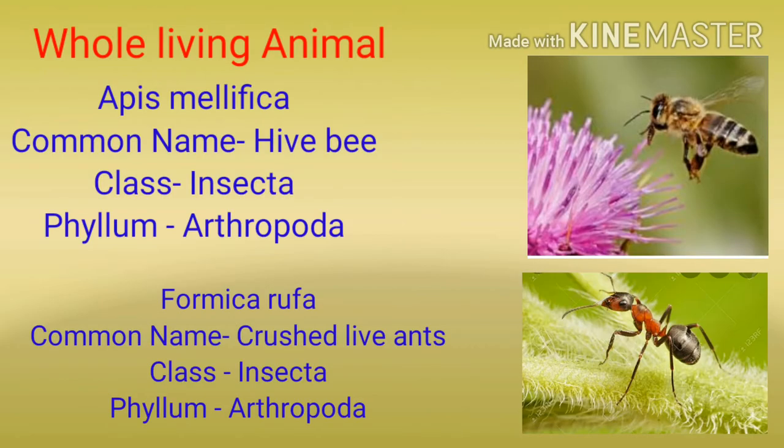सबसे पहले whole living animals से बनने वाली drugs की बात करते हैं। Whole living animals मतलब जीवित animal को use करके drug बनाया गया है। इसमें हमने पहला example लिया है Apis mellifica का, जिसका common name है hive bee। ये class Insecta से है और phylum Arthropoda।